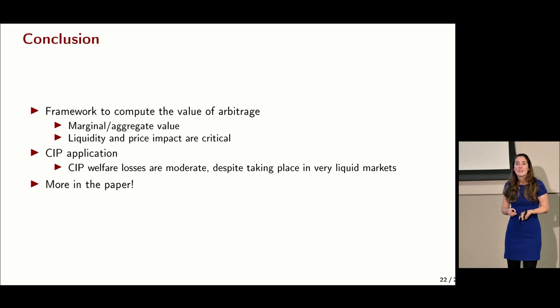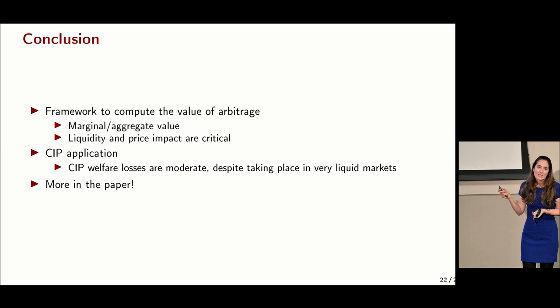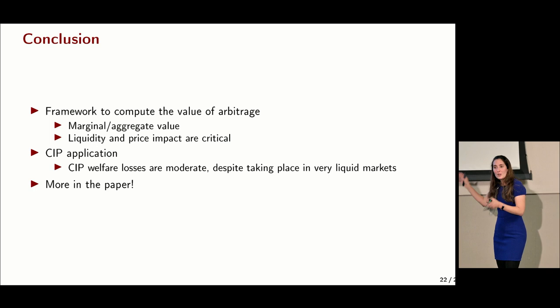To conclude: I showed a framework to compute the value of arbitrage, with marginal and aggregate social value measures. Good measures of liquidity are critical to obtaining these welfare estimates. In the CIP application, welfare losses are moderate despite occurring in very liquid markets, due to the negative correlation between gaps and market liquidity. There's much more in the paper, including extensions to production and multiple asset classes. Happy to discuss further.